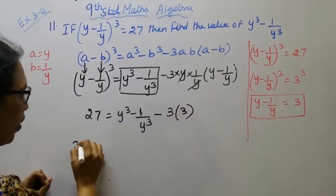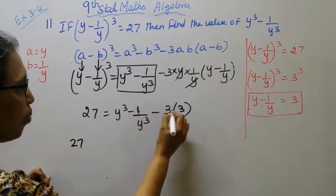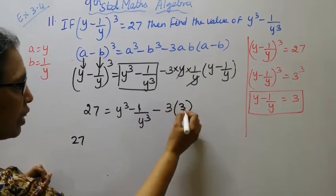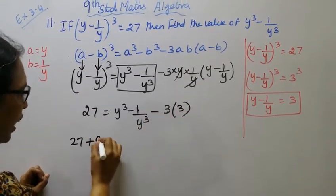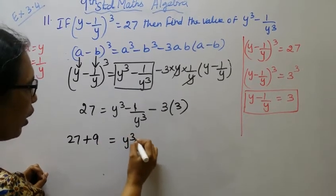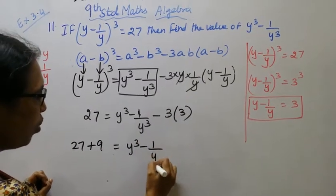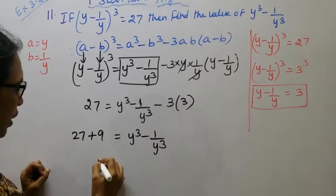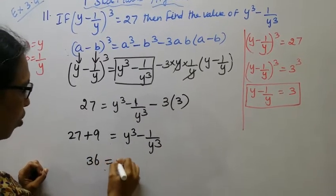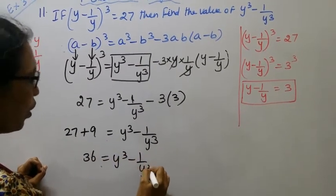Then 27 minus 9. 3 times 3 is 9. Minus 9 here becomes plus 9 there. That equals y cube minus 1 by y cube. 27 plus 9, that is 6, equals y cube minus 1 by y cube.